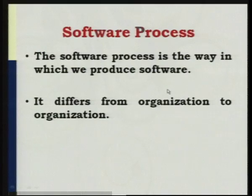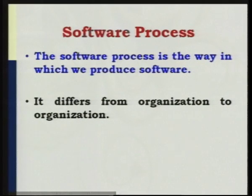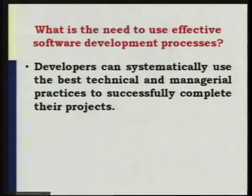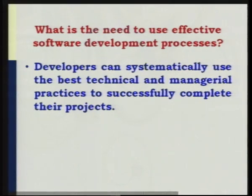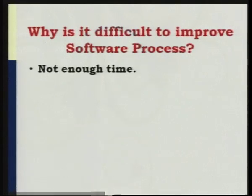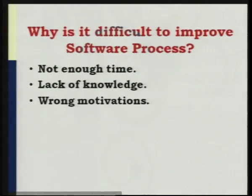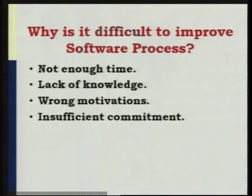Now we will talk about software process — how exactly, as we have defined software engineering as manufacturing software, we must have a sequence of processes to be developed. Software process is the way in which we produce the software, and it differs from organization to organization. The need to use an effective software development process is that developers can systematically use the best technical and managerial practices to successfully complete their projects. Improvement is difficult because of insufficient time, lack of knowledge, wrong motivations, and insufficient commitment.